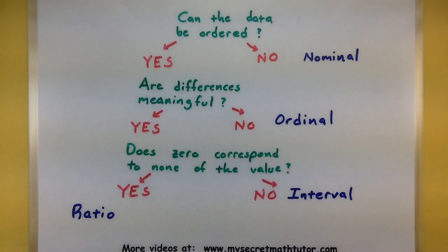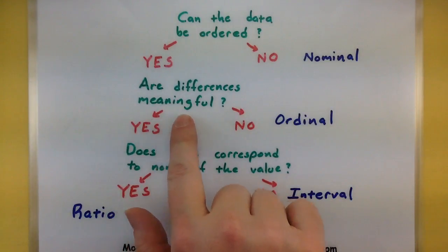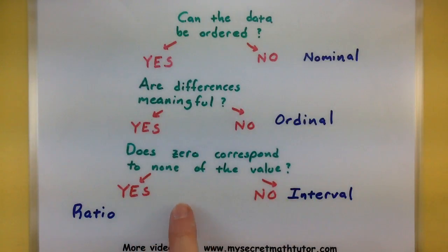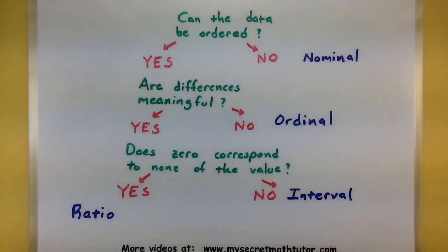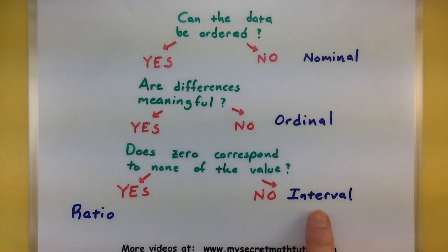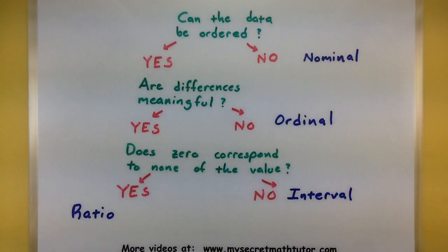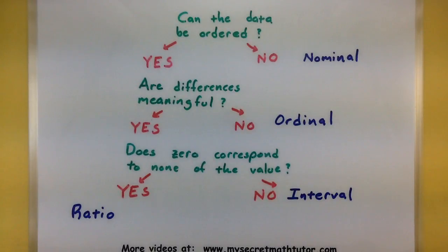Now if the data can be ordered and differences are meaningful, then you want to ask: does zero correspond to none of the value? If the answer is no, then you classify it as interval. If the answer is yes, then you say ratio. I have a bunch of different examples and I'll walk through these questions so you can see exactly what I mean by ordered, differences meaningful, and does zero correspond to none of the value.